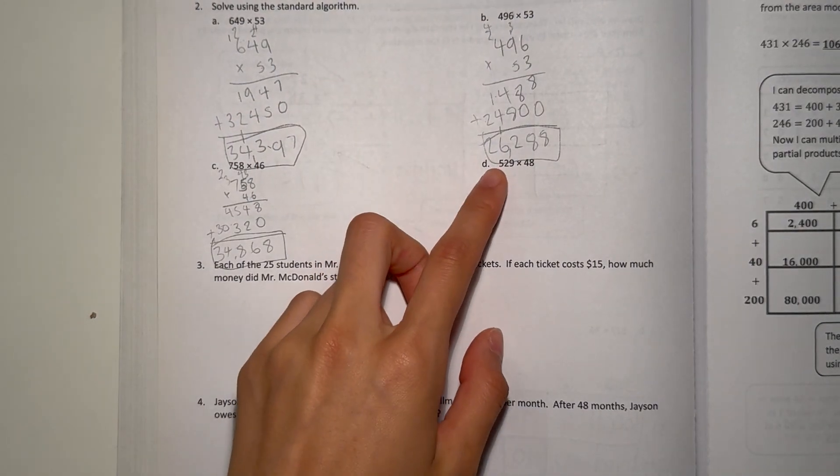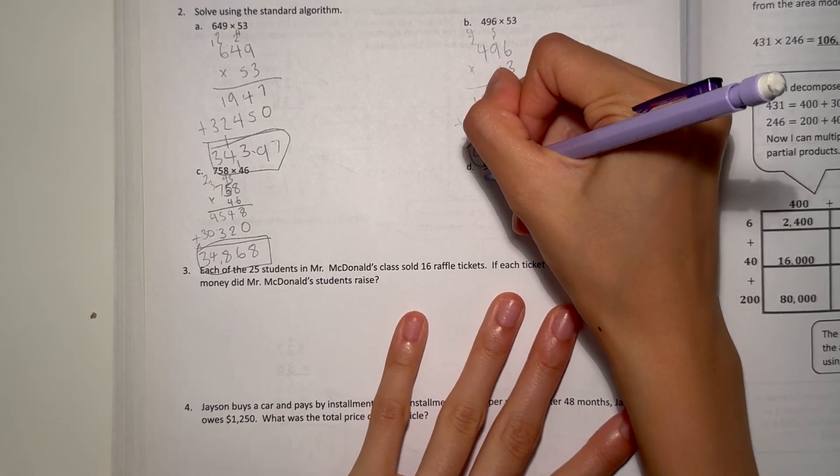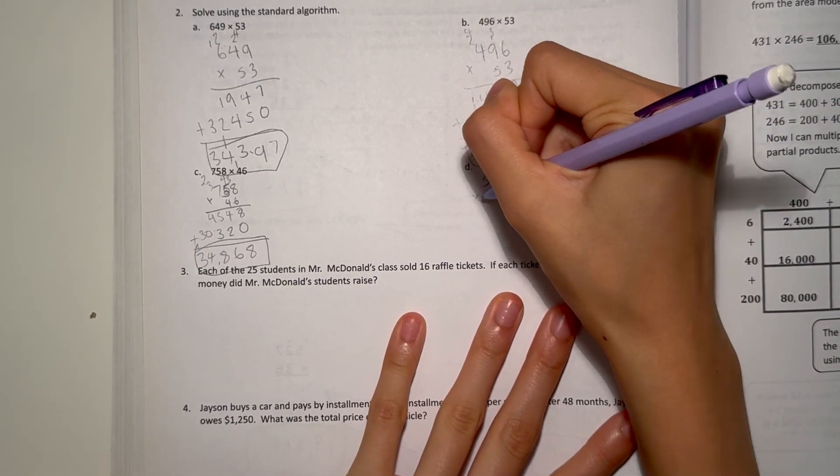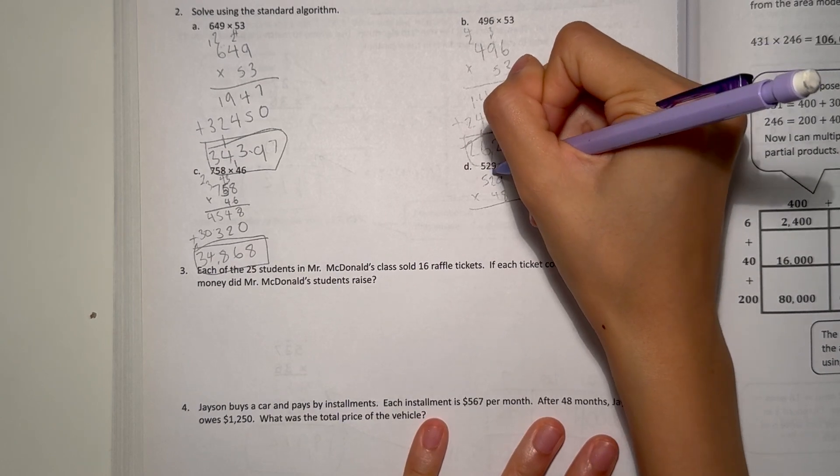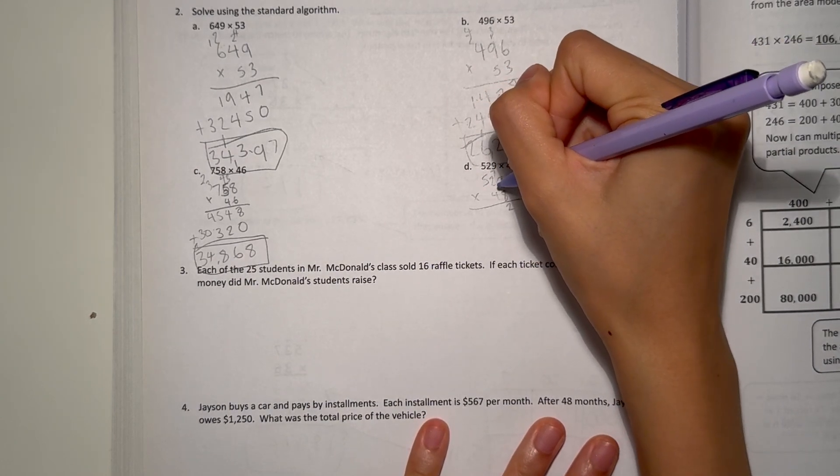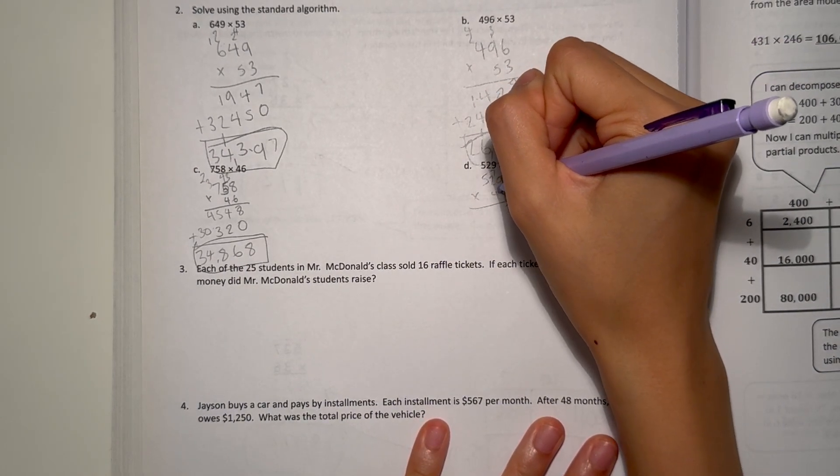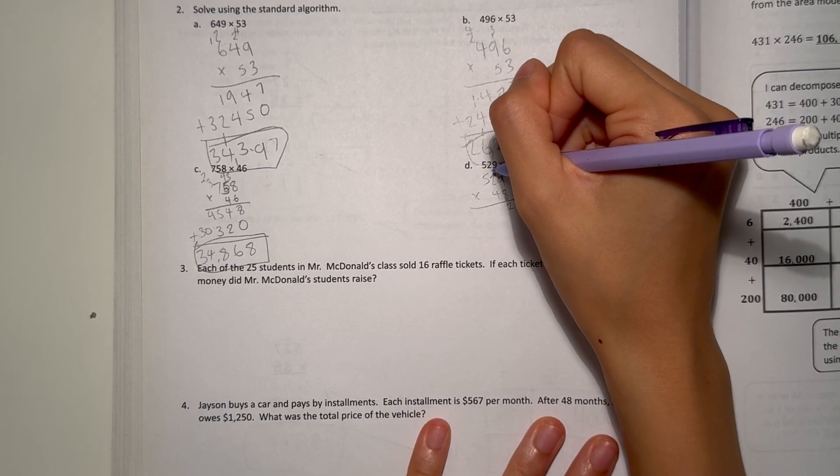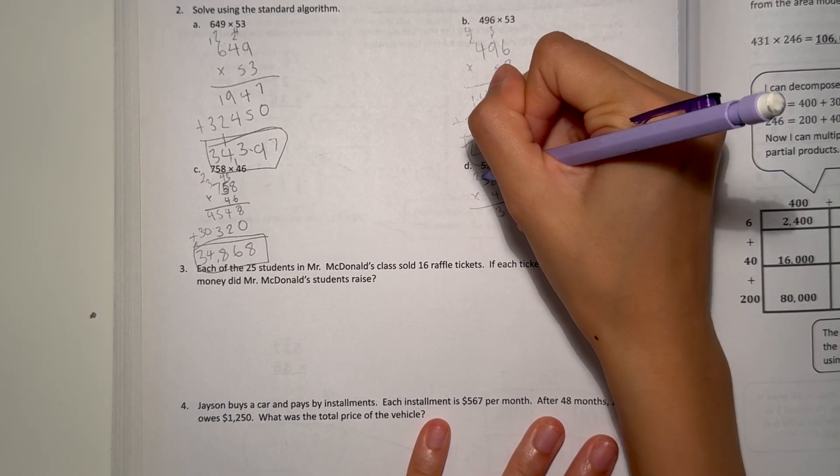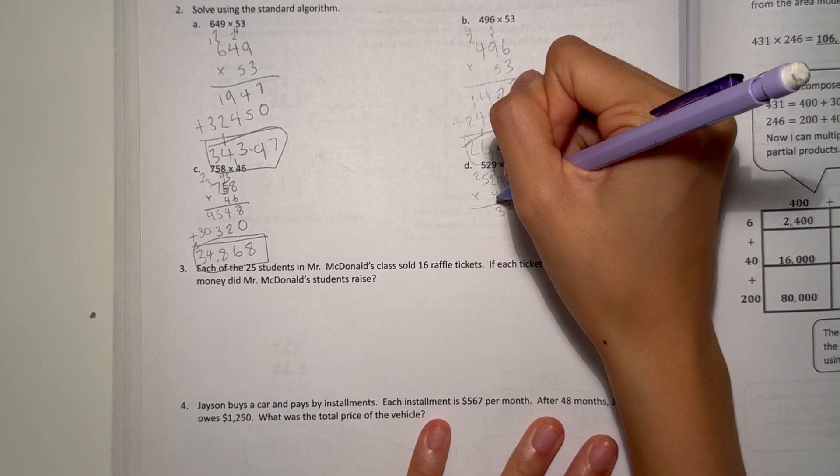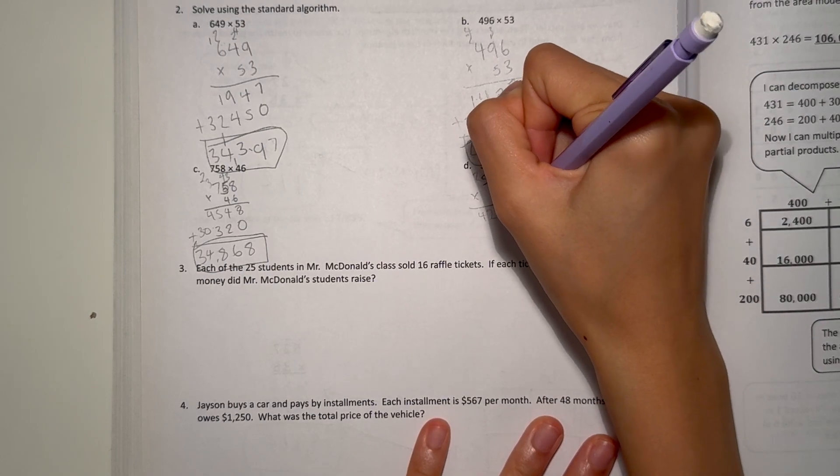Alright. And now let's look at D. 529 times 48. 9 times 8 is 72. 2 times 8 is 16 plus 7 is 23. 5 times 8 is 40 plus 2 is 42. Add a 0.